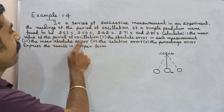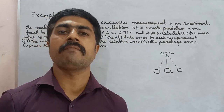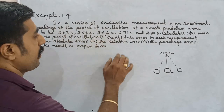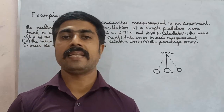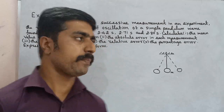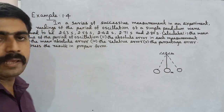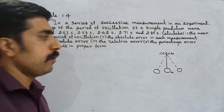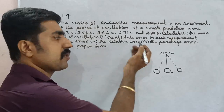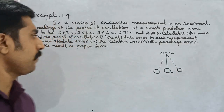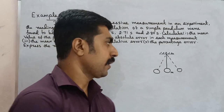Calculate the mean value of period of oscillation. Then mean absolute error, absolute error — error analysis explained. First: absolute error. Second: average absolute error. Third: relative error. Fourth: percentage error. Last: express the result in proper form — the final value.